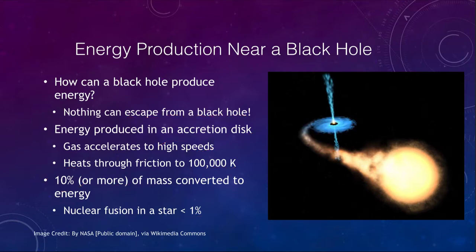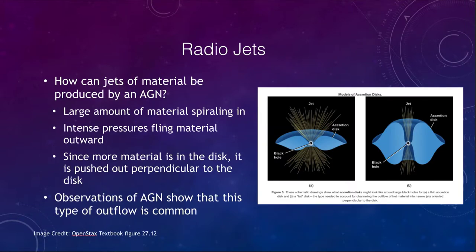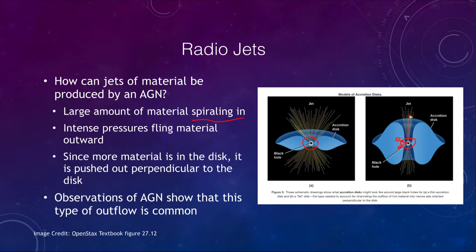We can also form jets of material. Material spiraling in experiences intense pressures trying to push it outward. It can't move in all directions — material trying to exit in the same direction it spiraled in through the accretion disk won't work. The only way out is through jets of material going out around the poles, away from the accretion disk.